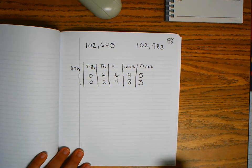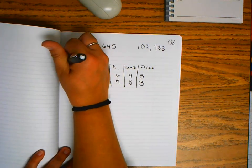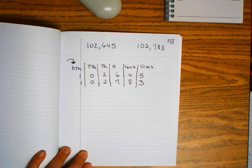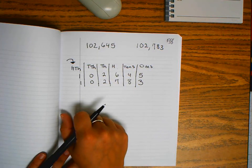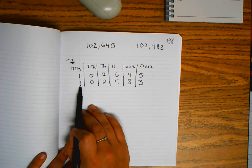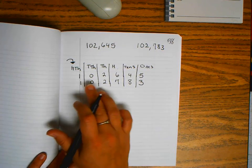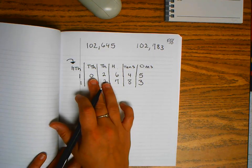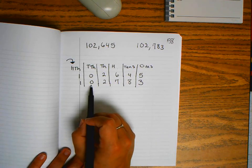You start at the greatest place. In this case, we start at the hundred thousands because that's the biggest place. We compare 1 and 1 - those numbers are the same. If they're the same, I move to the next place. 0 and 0 - those numbers are the same.